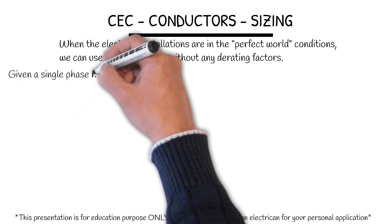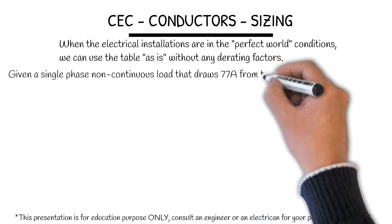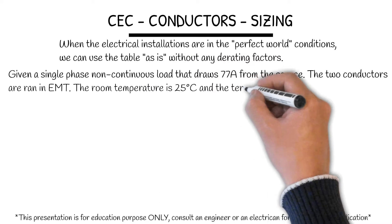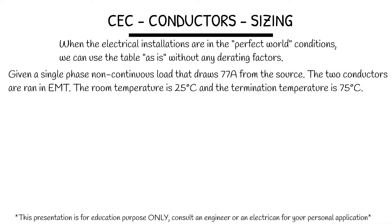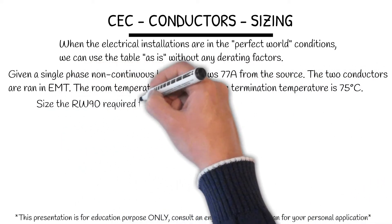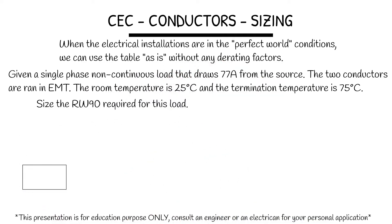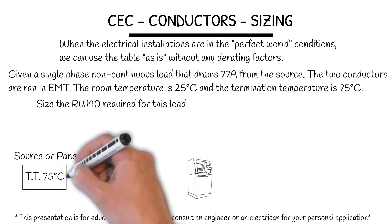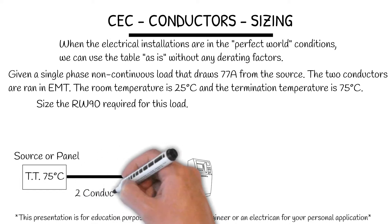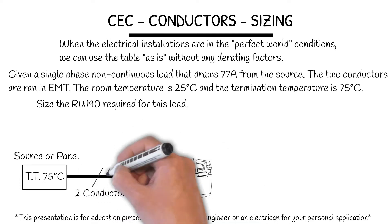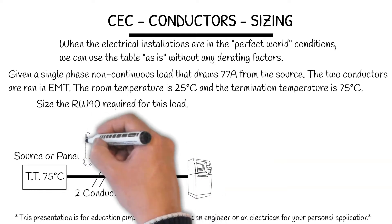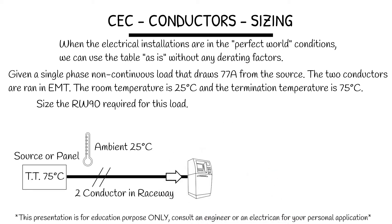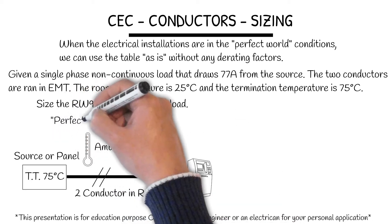Given a single phase non-continuous load that draws 77 amps from the source, and the two conductors are RW90 in EMT, the room temperature is 25 degrees Celsius, and the termination temperature is 75 degrees Celsius — so we have perfect world conditions. Size the RW90 required for the load. We have a termination temperature of 75, two conductors in the raceway, ambient of 25 degrees Celsius, and my load draws 77 amps. This is my perfect world condition.